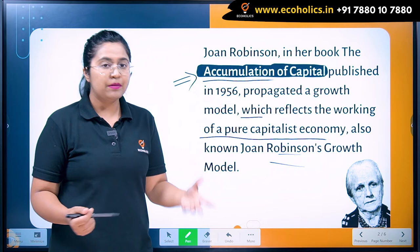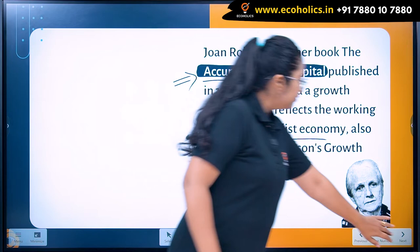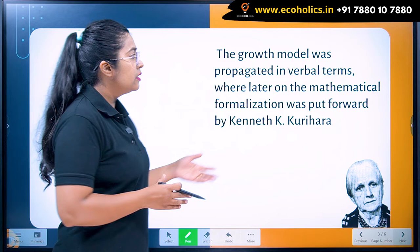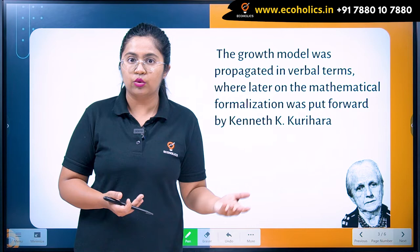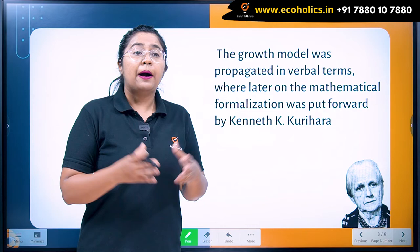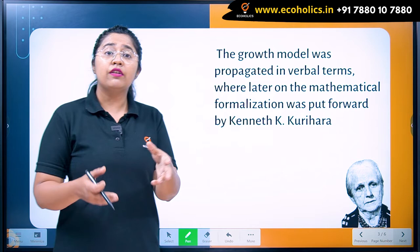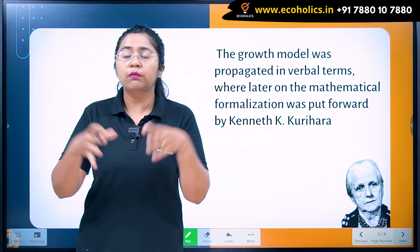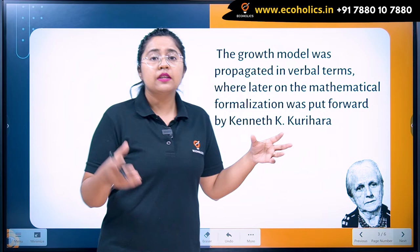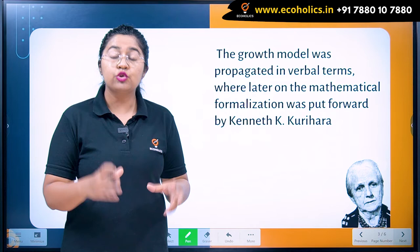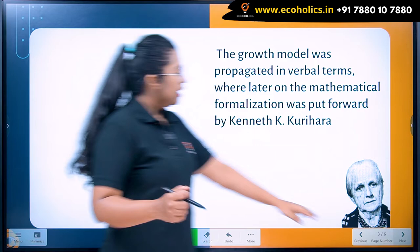Let's understand what exactly were the determinants or elements in the growth model given by Robinson. The growth model propagated from that era where she was known as the propagator of post-Keynesian economics. There were various elements that were different from Keynesian economics but similar from the point of view of classical economics. Still, there were a variety of things that were quite different in nature of how the model was constructed. Later, the formalization of equations was done by Kenneth Kurihara, who collaborated with her model using a mathematical approach to make the model more sensible and approachable.